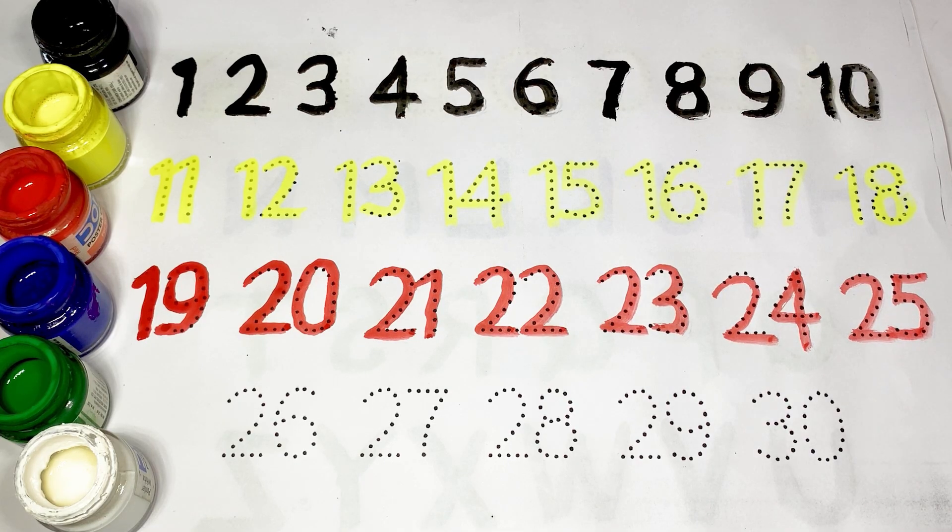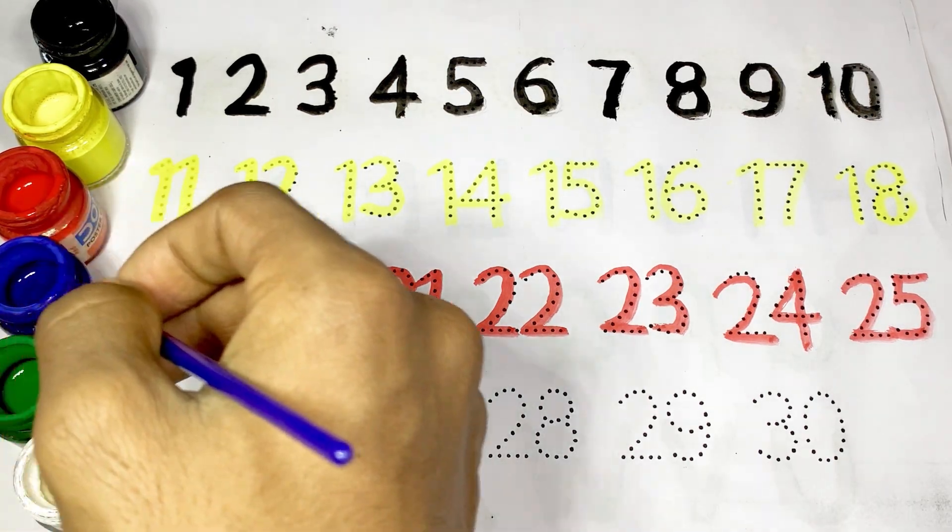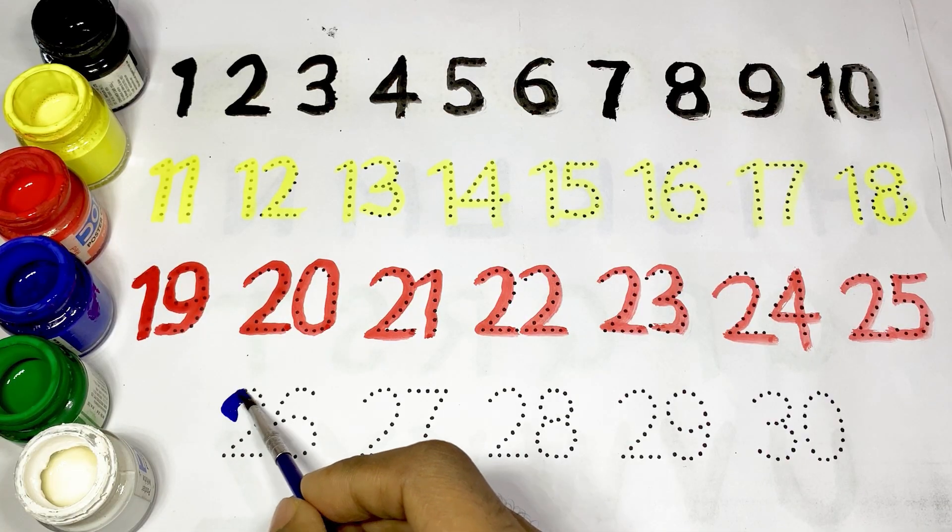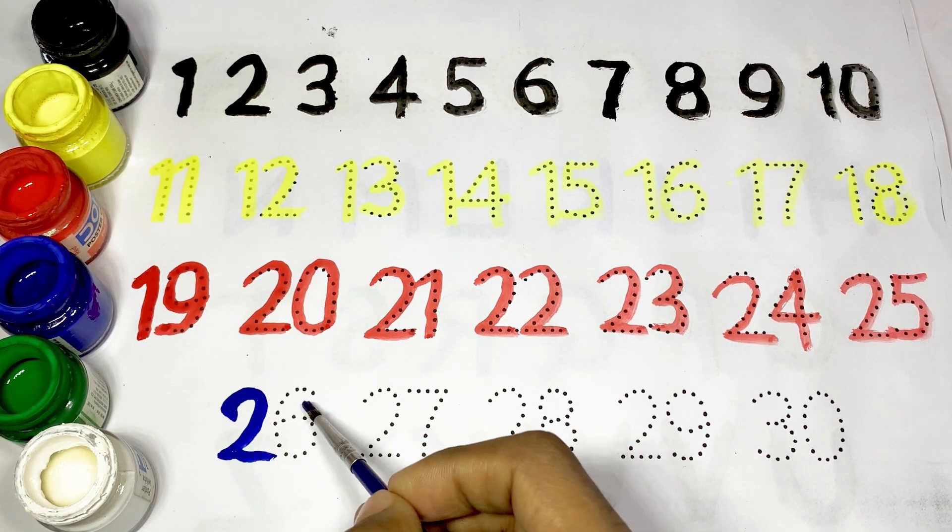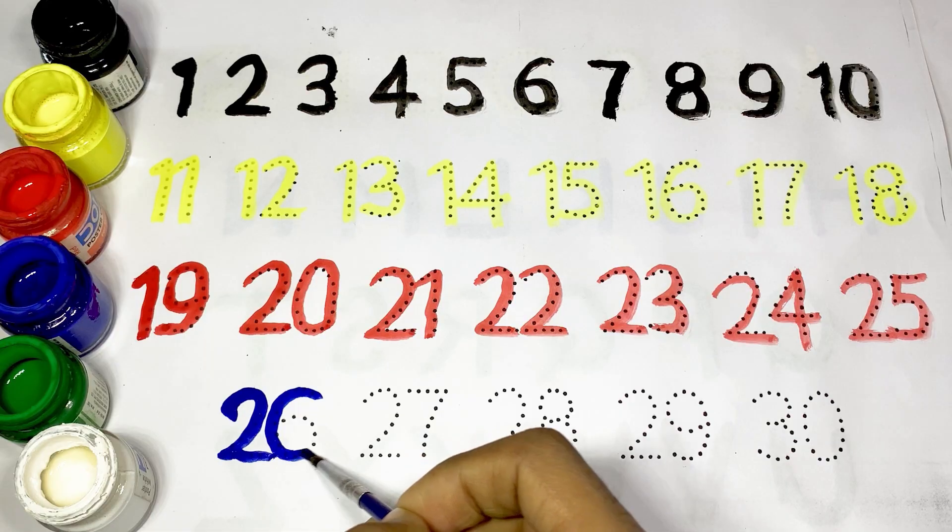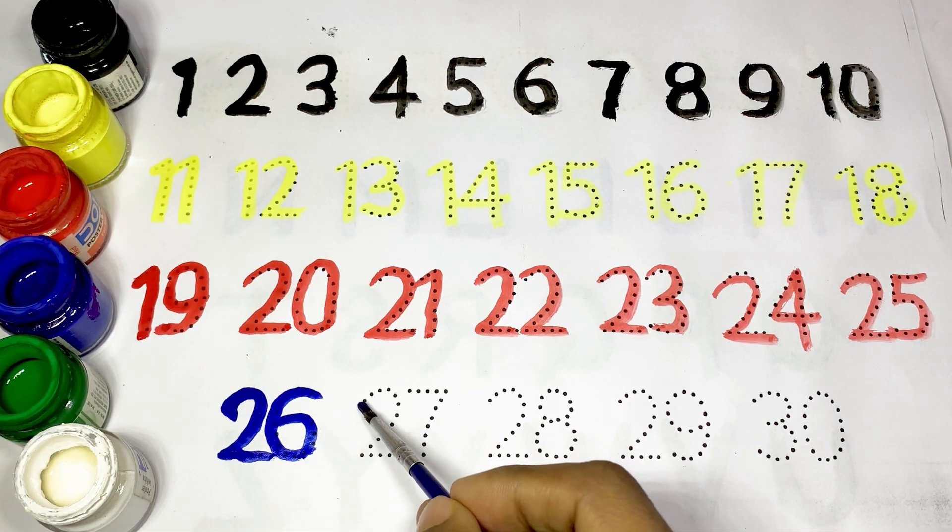Number twenty-six uses blue color. Blue color. This is twenty-six. This is twenty-seven.